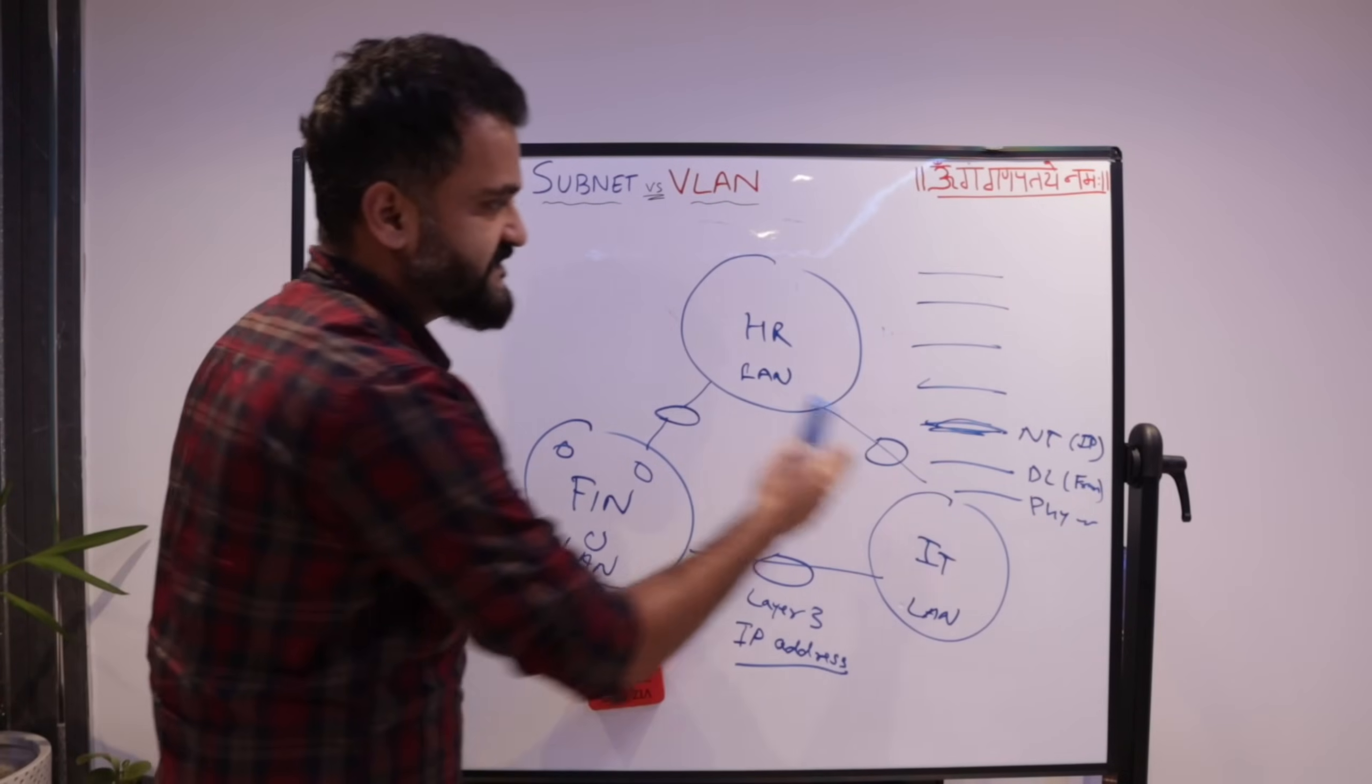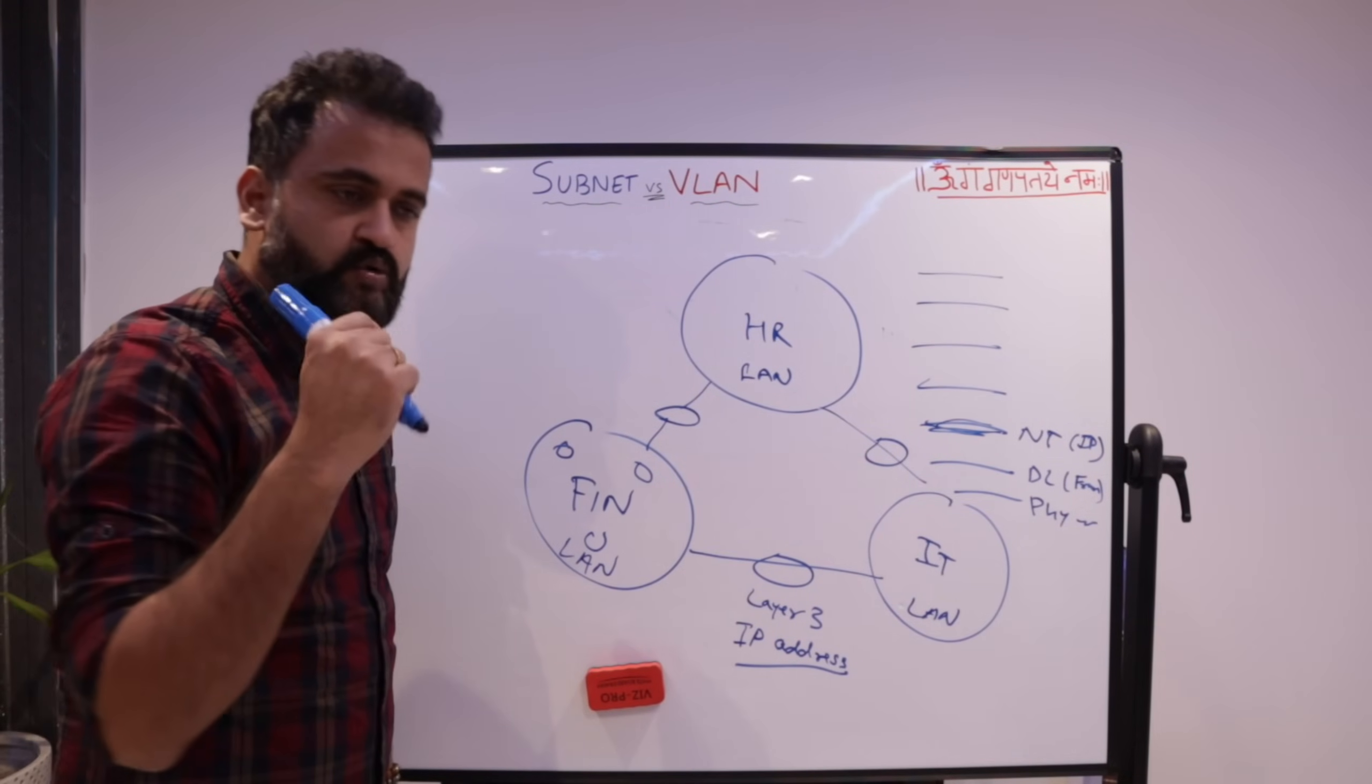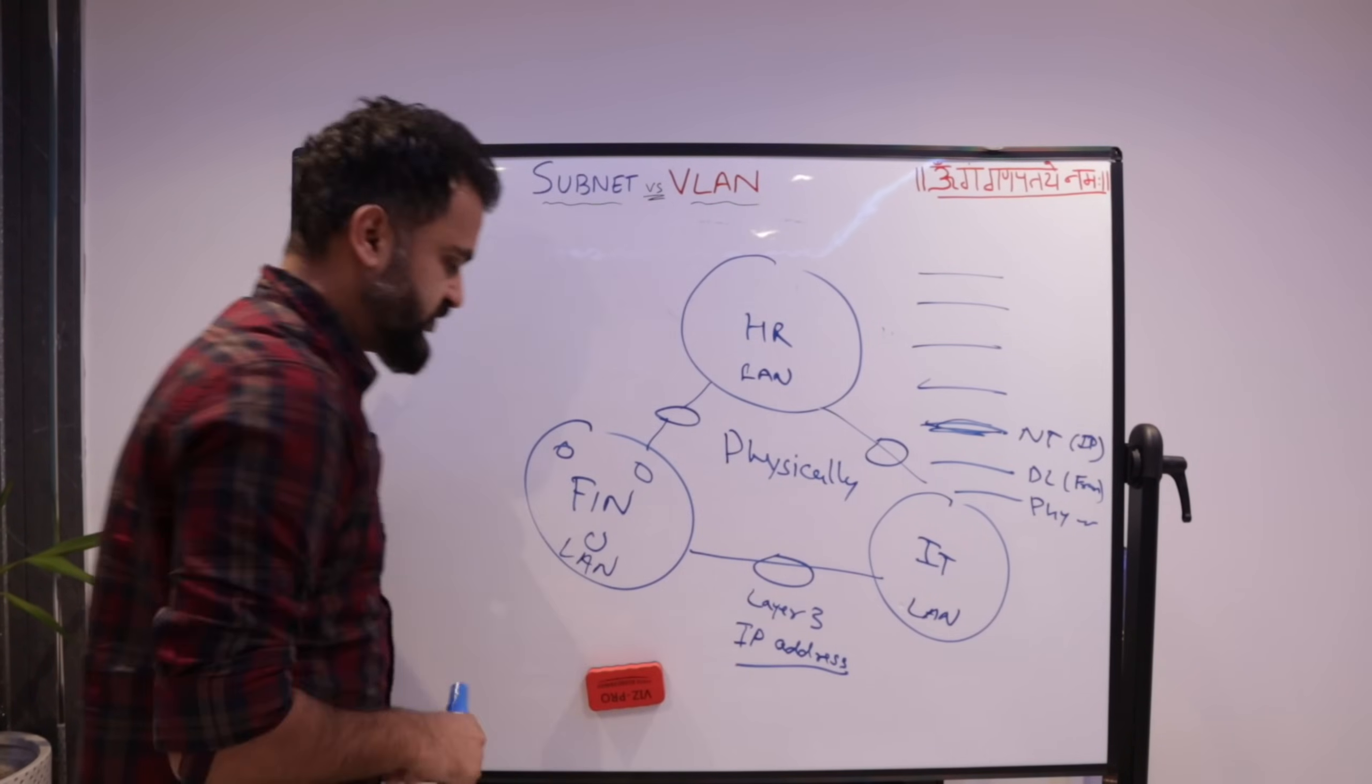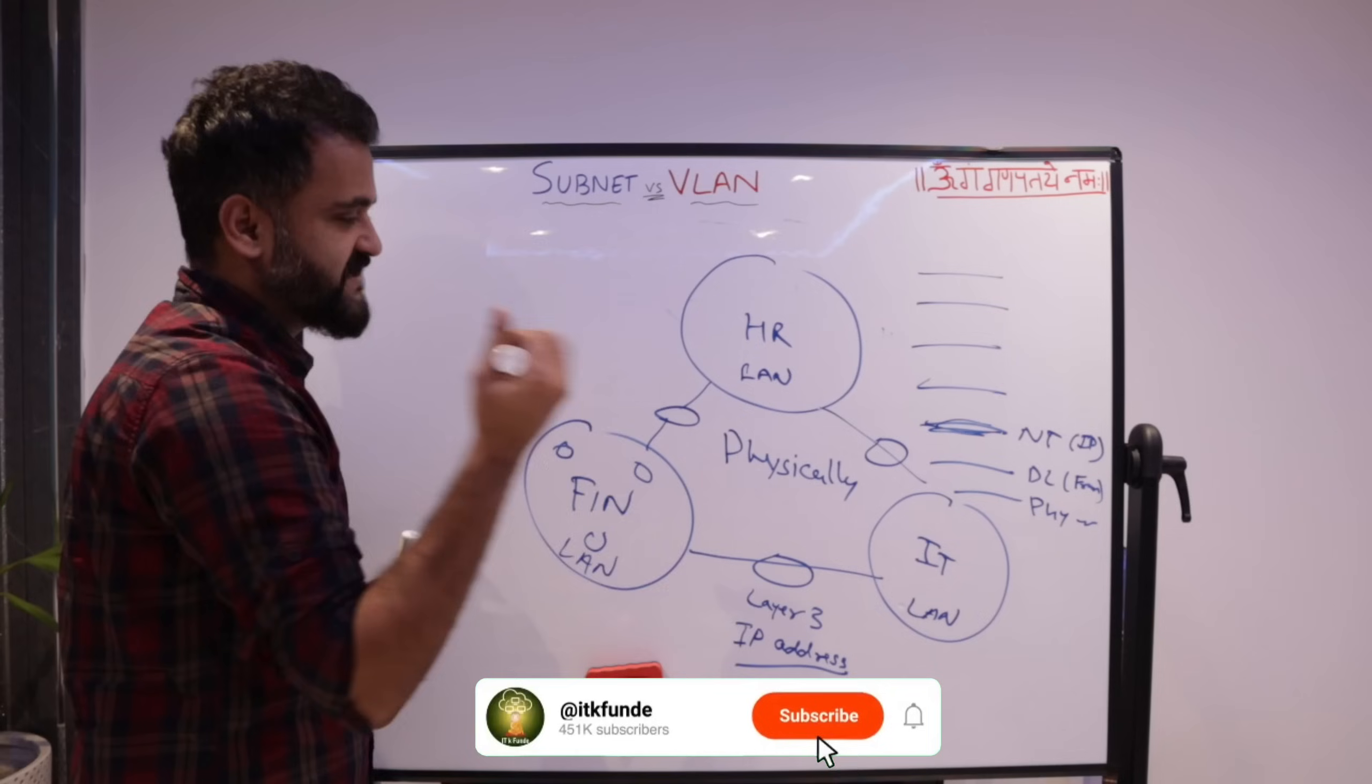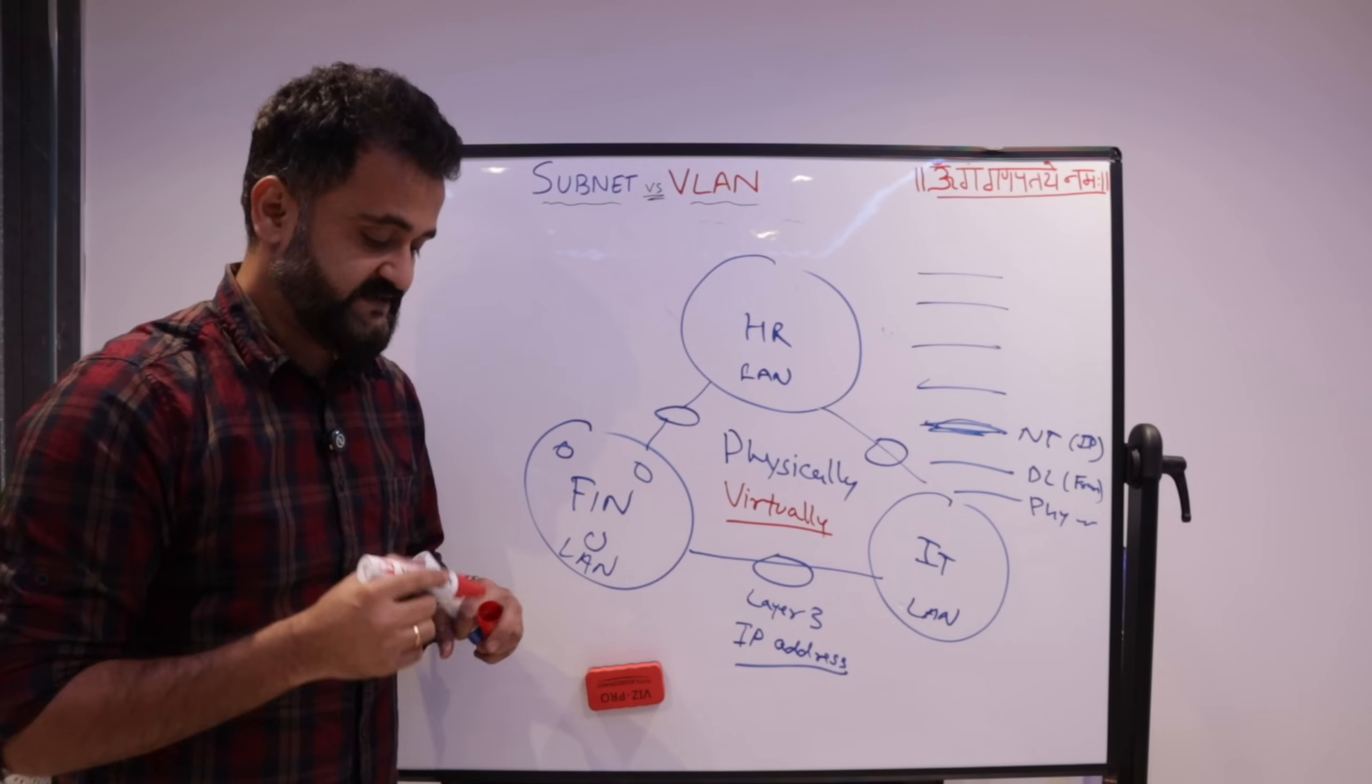But what if we can make this work at layer two, and that's where you can actually instead of separating it physically, you can use a concept of VLAN, which is virtual LAN. The name suggests that we can do it virtually. And how does that work? Let's understand.